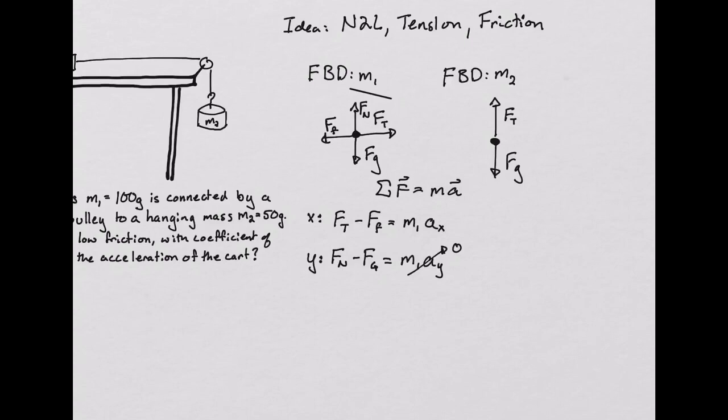For mass m2, I only have a y component to worry about. So, starting off, I have in the positive direction the force due to tension minus the force due to gravity is equal to m2 times the acceleration in the y direction. Unlike in the case of mass 1, here the object will start accelerating downward in the y direction.